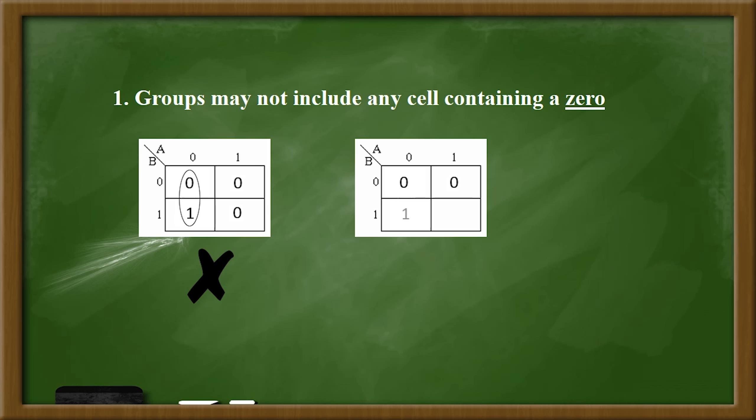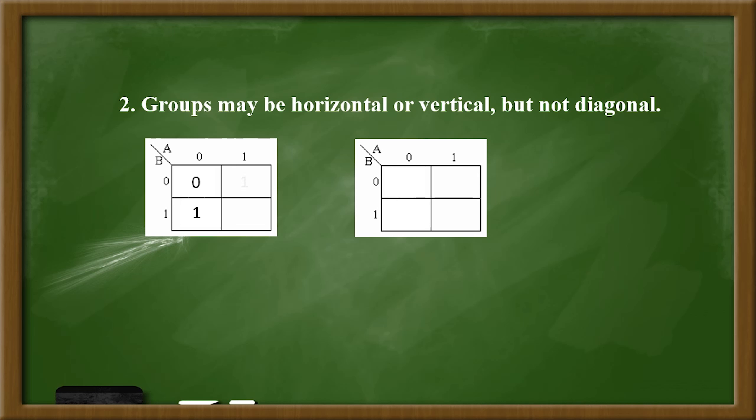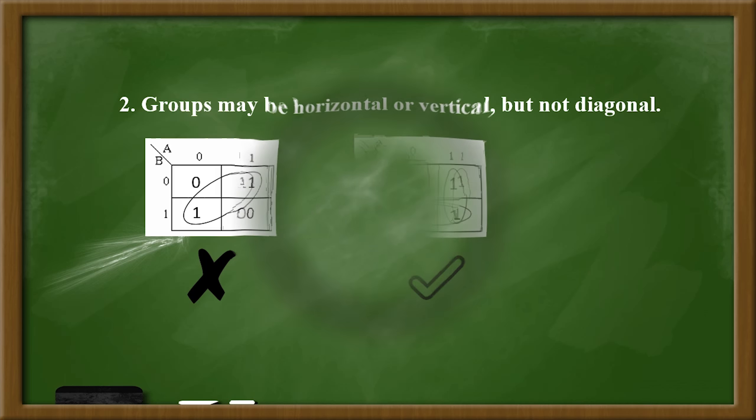The group may not include any cell containing zero, as we can see here on the screen. Groups may be horizontal or vertical but not diagonal. As we can see, the second one is right.